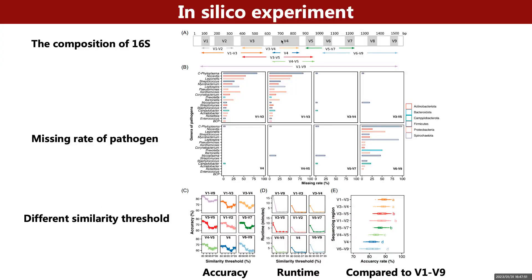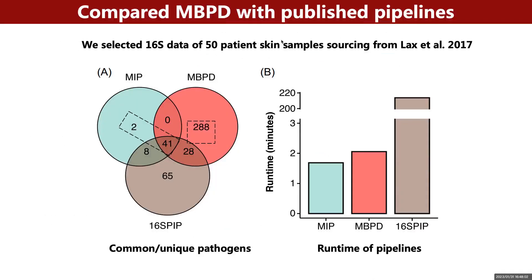However, due to the high missing rate of V1 to V3, we recommend V3 to V4 in short-read sequencing to achieve better pathogen detection performance.